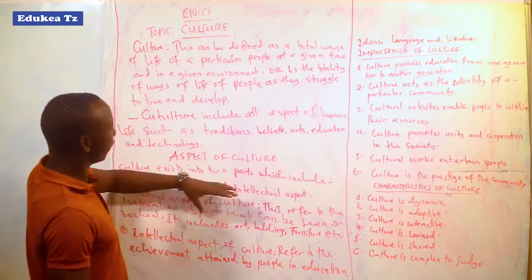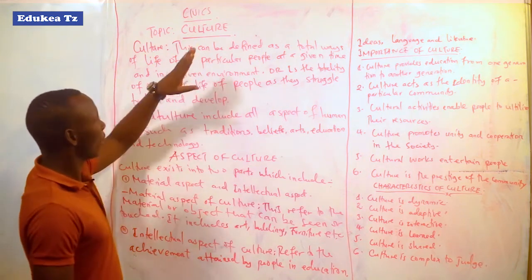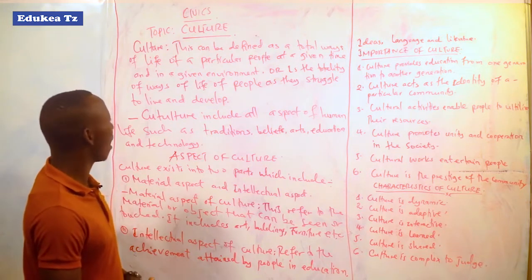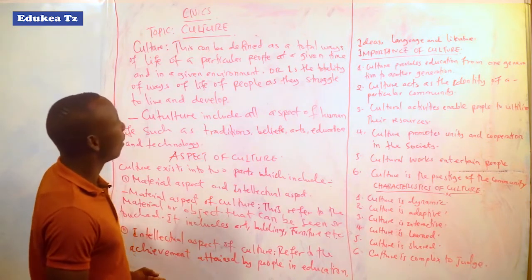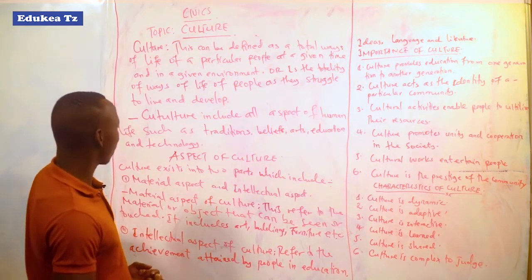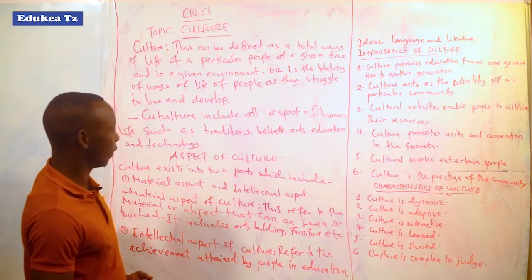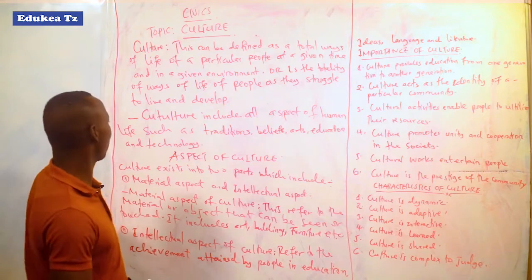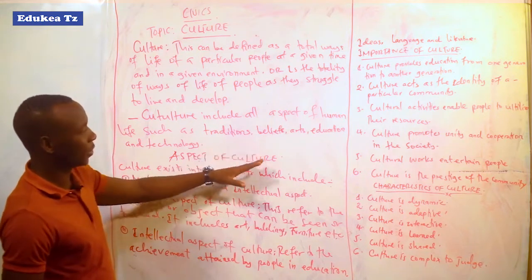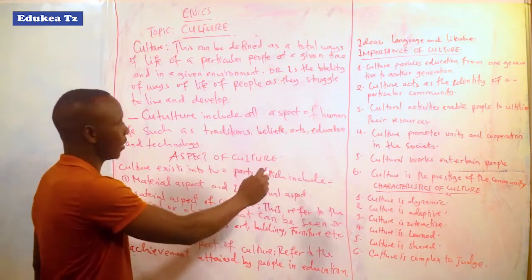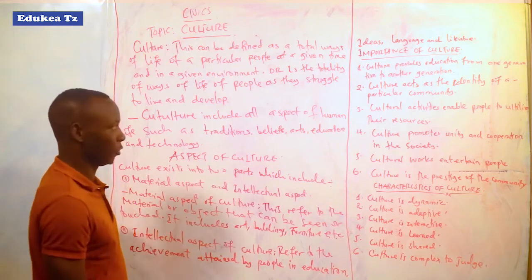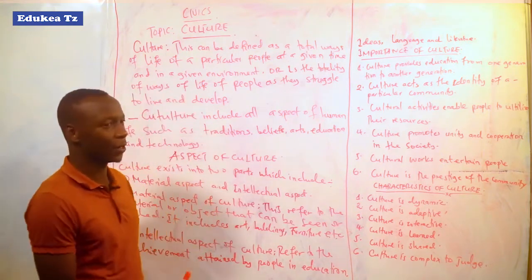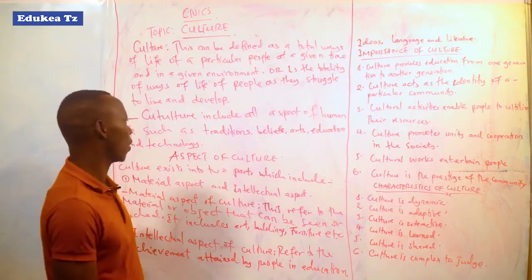After understanding the meaning of culture, let us see how culture exists in different aspects. Culture includes all aspects of human life such as traditions, beliefs, arts, education, and technology. These are all elements of culture — they are what identify the culture of certain people.